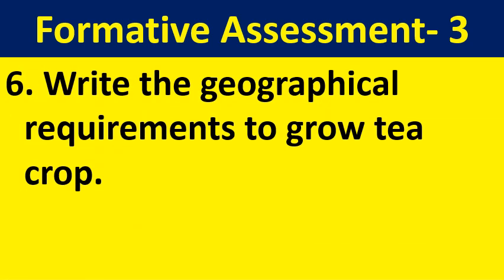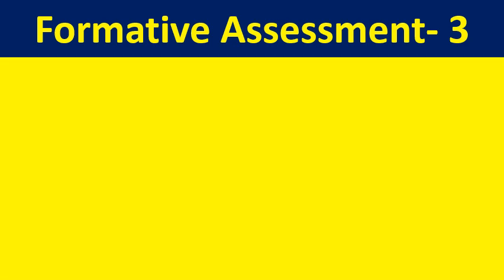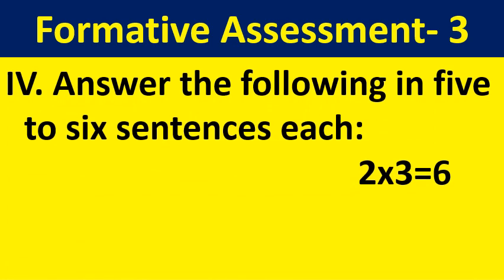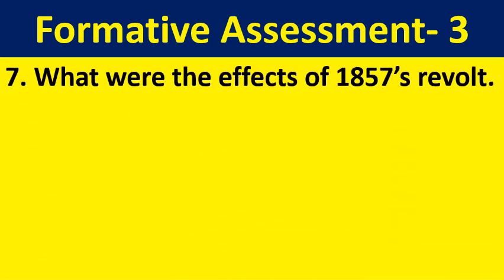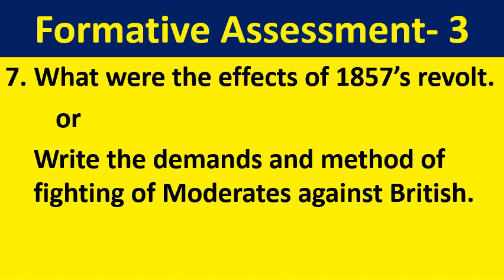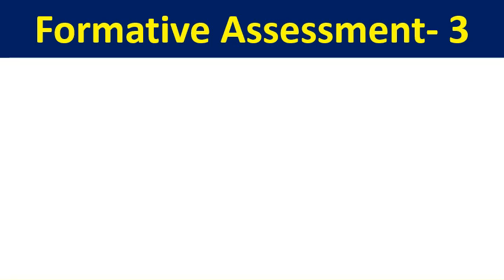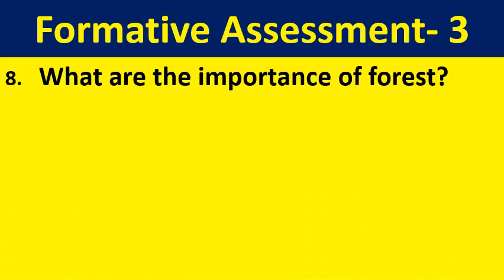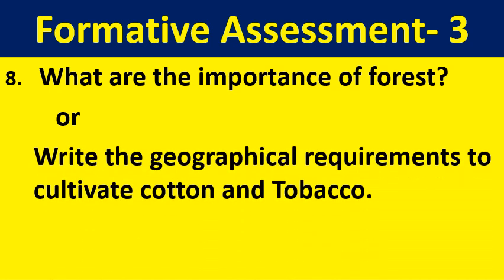Question 6: Write the geographical requirements to grow tea crop. Now we have 3-mark questions. You have 2 questions here, each carries 3 marks. Question 7: What were the effects of the 1857 revolt? Or: Write the demands and methods of fighting of moderates against British. Question 8: What are the importance of forests? Or: Write the geographical requirements to cultivate cotton and tobacco.